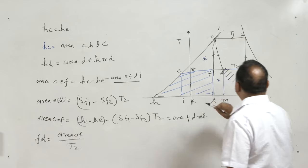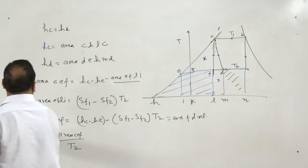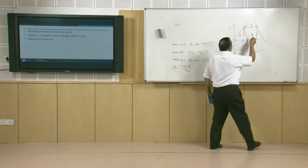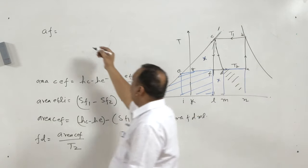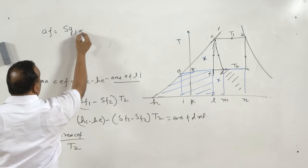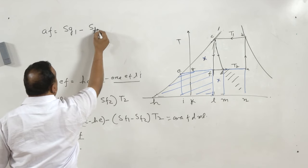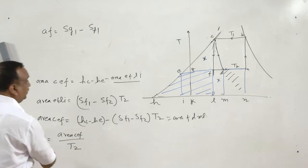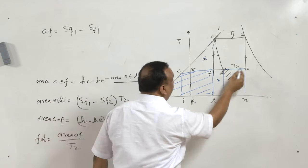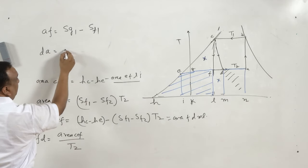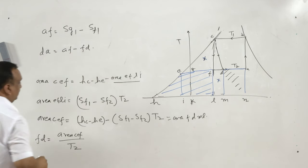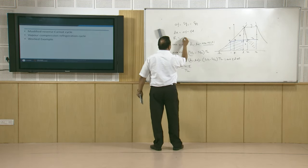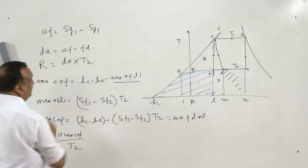Since we have the value of A-F and we now have the value of F-D, the refrigeration effect takes place during process D to A. The length D-A is going to be A-F minus F-D. Through this process we can find the value of D-A. For the refrigerating effect, if we multiply D-A by T2, this will give us the refrigerating effect during the process.